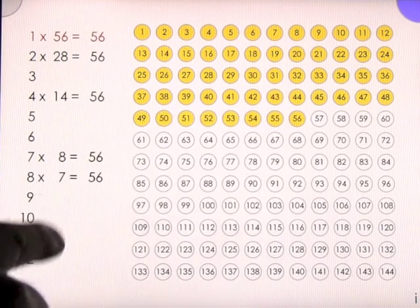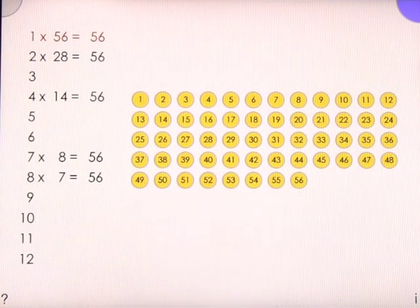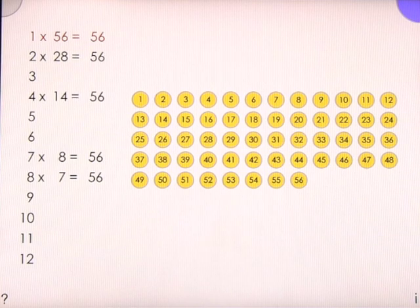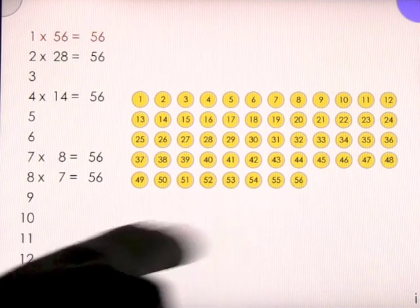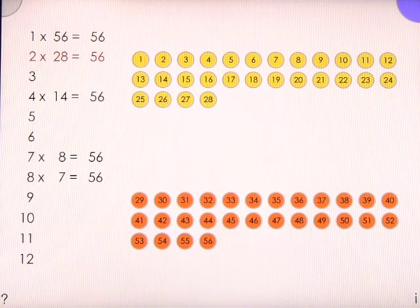But what is really neat is if you do this with the table and then you click up here, it separates it all for you. And then if you click on one of these, you'll see 1 times 56 is what's showing.